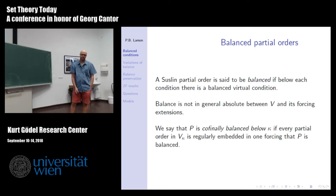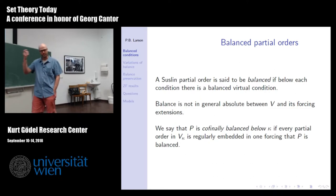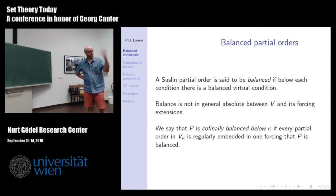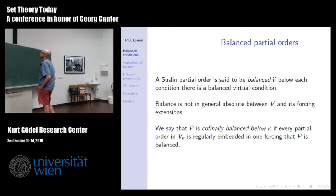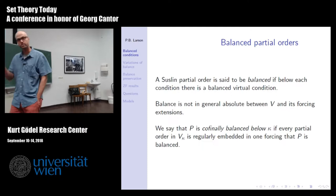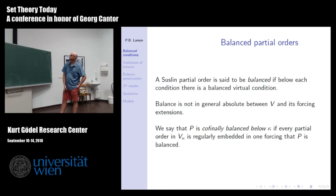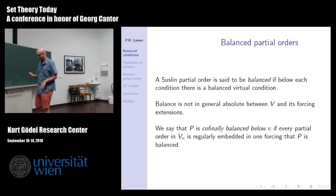We're going to call a partial order balanced if below each condition there is a balanced virtual condition. Balance is not in general absolute — it's absolute for all the cases I just showed, but there are partial orders where balance can be created or destroyed by forcing. In light of that, we say that P is cofinally balanced below κ if you can always force to recover balance. So even if you weren't balanced, you can become balanced again — that's what it means to be cofinally balanced.